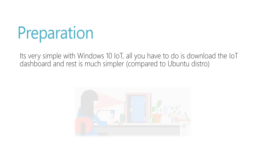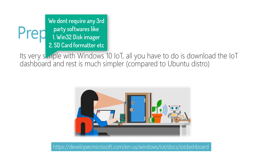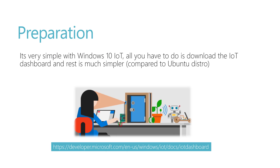The preparation of Windows 10 IoT is very simple. All you have to do is download the Windows 10 IoT dashboard, and the rest is much simpler compared to the Ubuntu distro. You can go to https://developer.microsoft.com/en-us/windows/iot/docs/iotdashboard — that's where you can download the IoT dashboard, install it on your machine, prepare the memory card, and install Windows 10 IoT. Let's quickly see this in action.